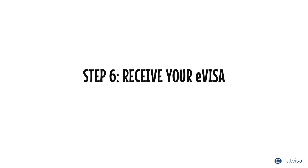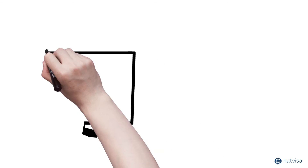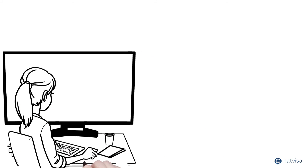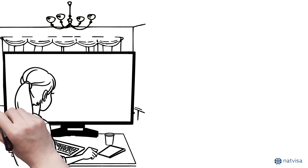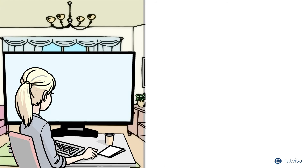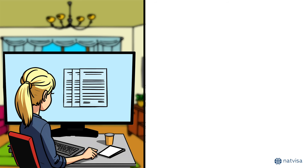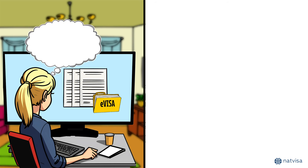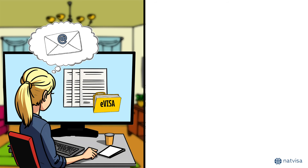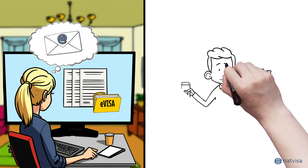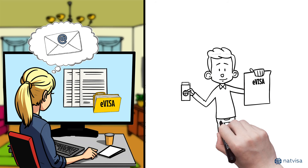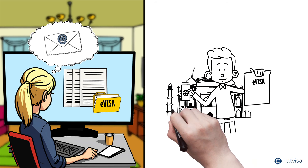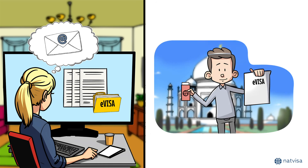Step 6: Receive your e-visa. Upon approval of your India visa, you will be sent an email containing your electronic travel authorization or ETA, a.k.a. e-visa. Ensure that you print a copy of your ETA and carry it alongside your American passport at all times during your trip.